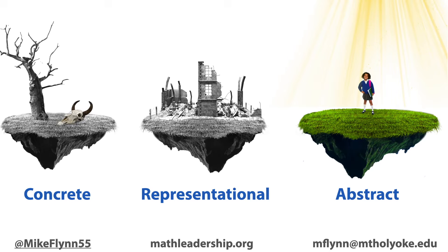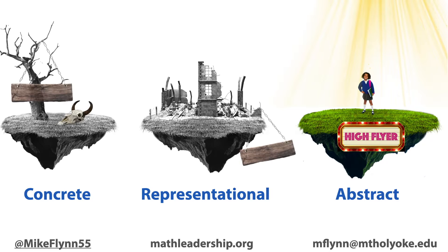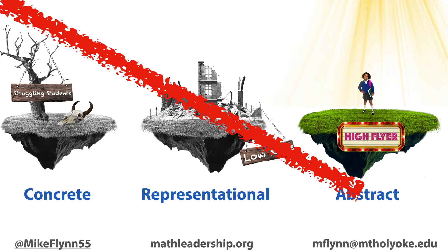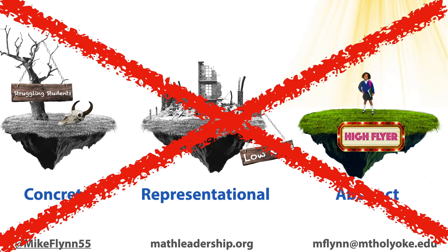Students who make it to abstract island are celebrated as mathematically capable and given distinguished labels such as high flyer or advanced, while the students who are on concrete and representational islands are often seen as struggling students or low kids in need of intervention. These labels often determine how students are treated, which then reinforces their mathematical identities. We need to fix this. This misinterpretation of the CRA model creates scenarios where a certain kind of thinker gets all the praise and distinction of being a mathematically capable student, while the students who think differently are devalued.